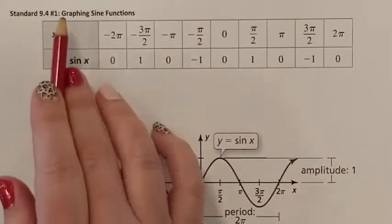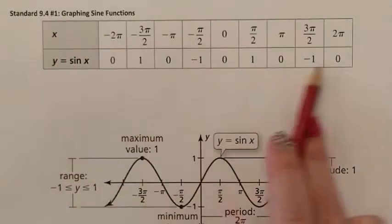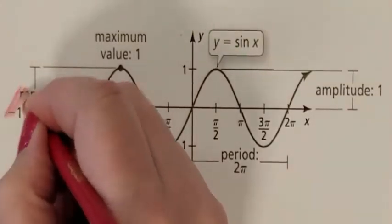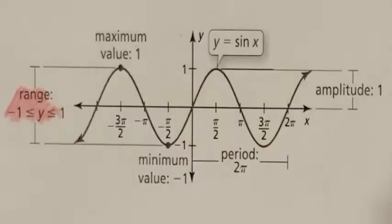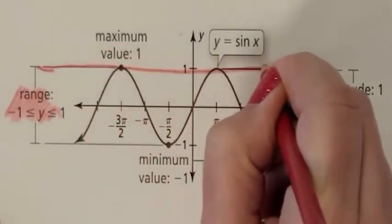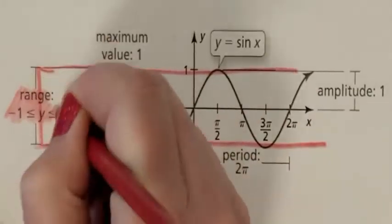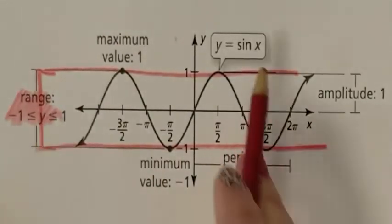Let's do 9.4 number one, graphing sine functions. We have a table and a graph of our sine. A few things I want to point out about the graph. You will see that it has a range from negative one to one. It will always go as high as positive one and as low as negative one. The entire graph is stuck between positive one and negative one.